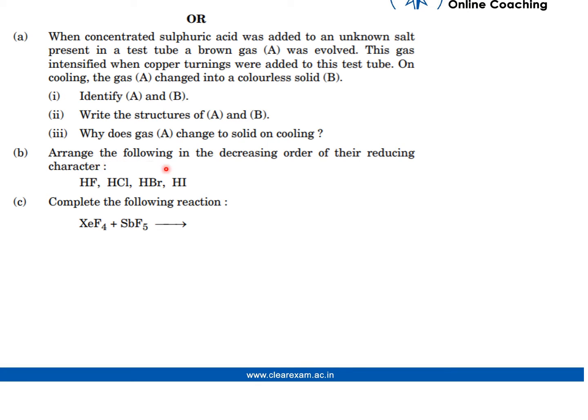Part (b) says arrange the following in the decreasing order of their reducing character: HF, HCl, HBr, HI. For part (c) we need to complete the following reaction: XeF4 + SbF5 gives what?